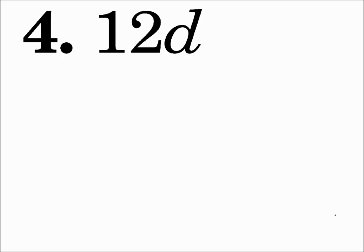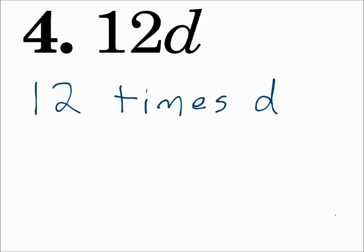Number four: 12d. That's 12 multiplied by d, so you could say simply '12 times d.' As you're doing these, you might find it easiest just to say them out loud, and however you say them out loud, that's what you would write.